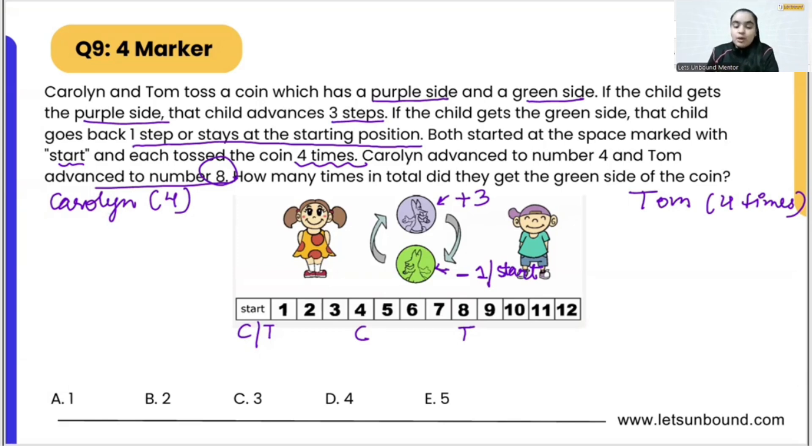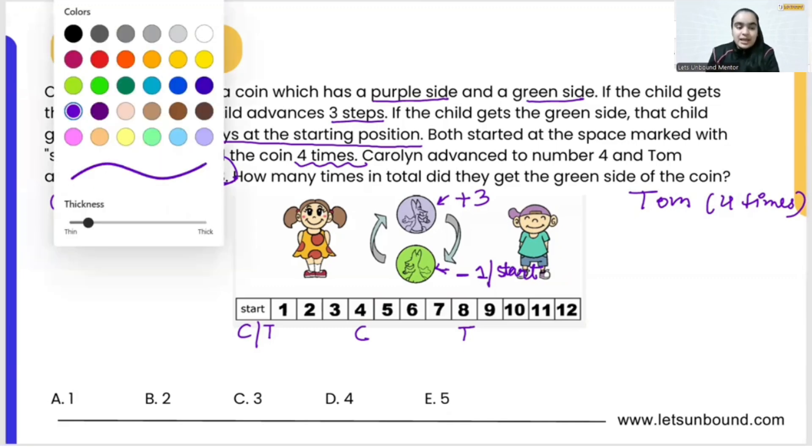Both are at starting position. Caroline will go to fourth number and Tom will go to eighth number. So let's see how we can solve this question. Let's start with the initial information that has been provided to us.